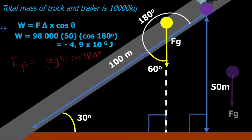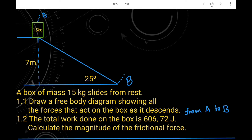Now it's time for practice. We have a 15 kg block sliding down from A to B; the vertical height is 7 meters, the angle of inclination is 25 degrees, and the box slides from rest. Draw a free body diagram showing all forces acting on the box as it descends. We are also given that total work done is 606.72 J, and asked to calculate the magnitude of the frictional force.